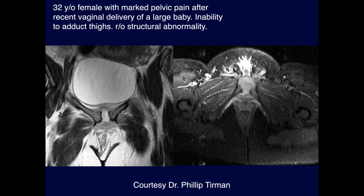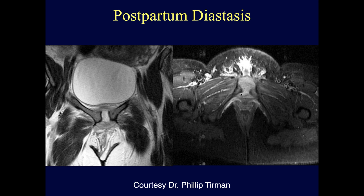A 32-year-old female with marked pelvic pain after recent vaginal delivery with inability to adduct. There is widening of the pubic symphysis and fluid signal intensity consistent with acute capsular injury of the pubic symphysis, along with edema within the bilateral adductor muscles. The acute widening and muscle edema suggest this is related to delivery rather than just pregnancy anatomy.